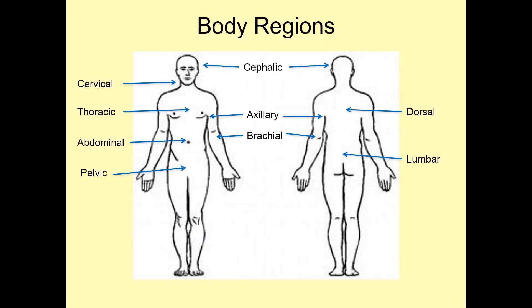We have a couple regions: the first being the cephalic or the head region, the cervical or the neck region, the thoracic or the chest region, the axillary or the armpit region, the dorsal or back, the abdominal or belly region, the brachial or arm region, the lumbar or lower back region, and the pelvic or hip region. We also refer to the forearms as the anti-brachial region and the elbows as the cubital region.